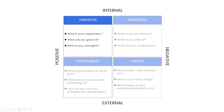Strengths: The first step is to identify and list what you think your and your business's strengths are — like what is your uniqueness, what are you good at, what is your strength. At this stage of the SWOT Analysis the list does not need to be decisive; any ideas and thoughts are encouraged.